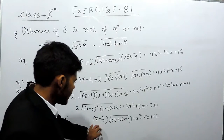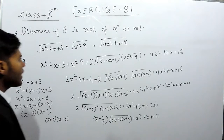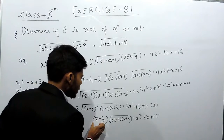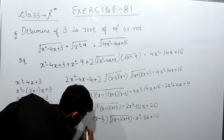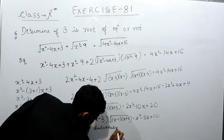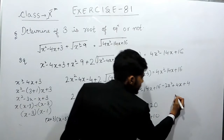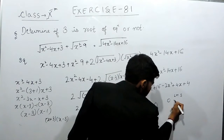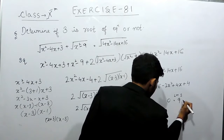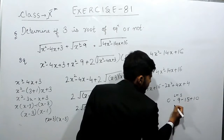Now this will come in the denominator, and if we want we can again take the root or we can directly substitute the value. So we substitute x equals 3. On substituting 3, the left hand side will be equal to 0, but the right hand side will be 9 minus 15 plus 10, which equals 4.